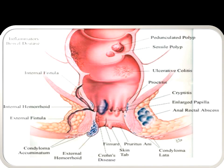Inflammatory bowel disease is also an important condition to consider. Now we can see the internal fistula and where it comes from. Internal hemorrhoids are seen above the dentate line. This is the anal region where we can visualize various pathologies.